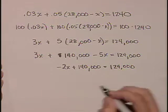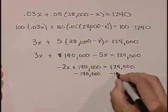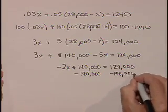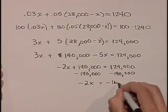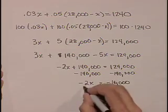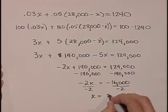Now we're going to subtract 140,000 from each side. We'll get negative 2X equals negative 16,000. Dividing both sides by negative 2, we get X equals 8,000.